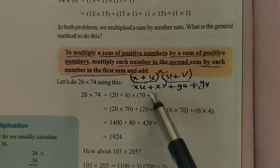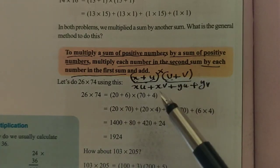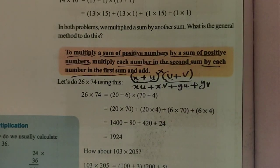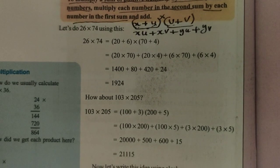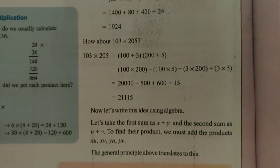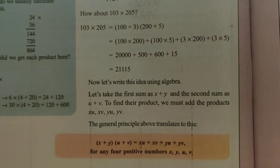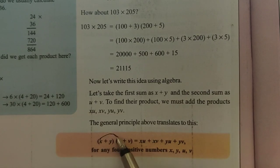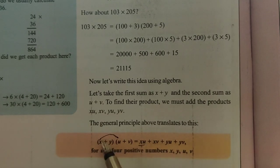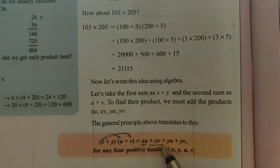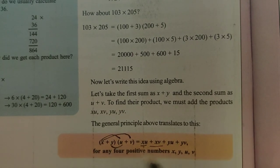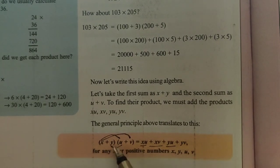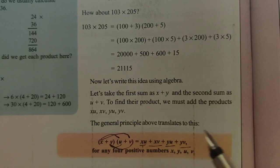This identity we now discuss here, and we can see this identity at the bottom of this page. The identity is explained as: X plus Y into U plus V equals XU plus XV plus YU plus YV. This is the first identity we studied in this lesson.